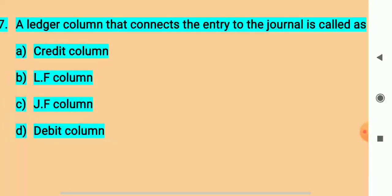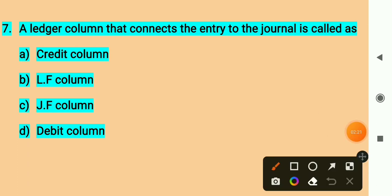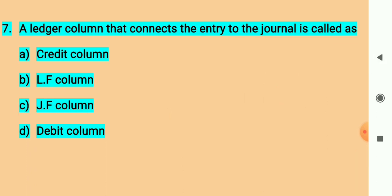Question number seven. A ledger column that connects the entry to the journal is called - there's a column in the ledger that connects with the journal. This is called JF column, journal folio. LF is ledger folio.